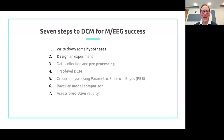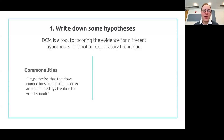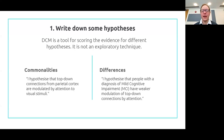Back to our seven steps to DCM success. Step one: write down some hypotheses. DCM is a tool for scoring the evidence for different hypotheses — it's not an exploratory technique. You need to be able to say what are the different models you want this machinery to assess. Those hypotheses could pertain to commonalities across participants — for example, that top-down connections from the parietal cortex are modulated by paying attention to visual stimuli. Or your hypothesis might concern differences between people — for example, that people with a diagnosis of mild cognitive impairment have a weaker modulation of top-down connections by attention.